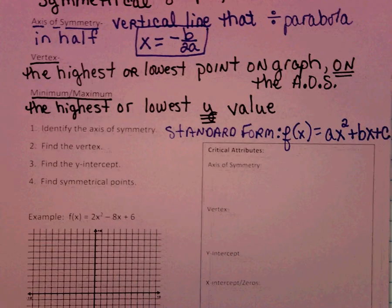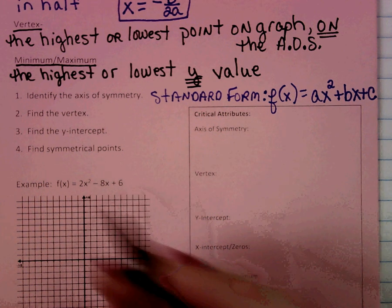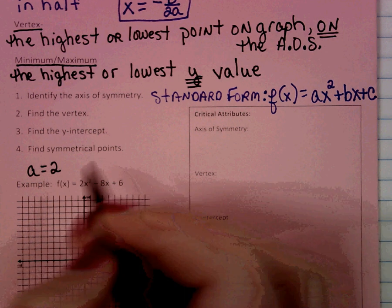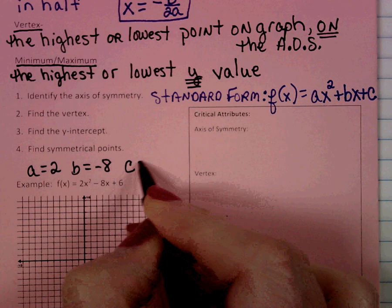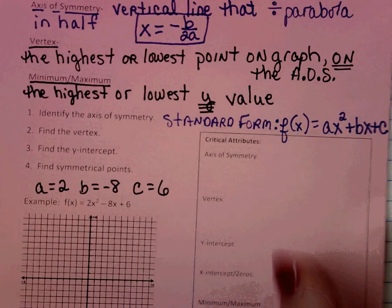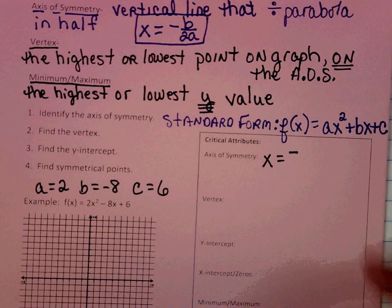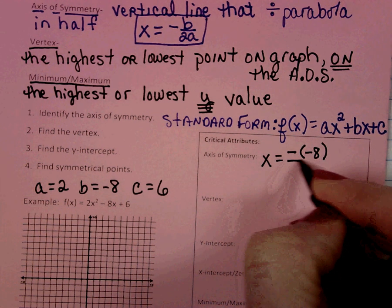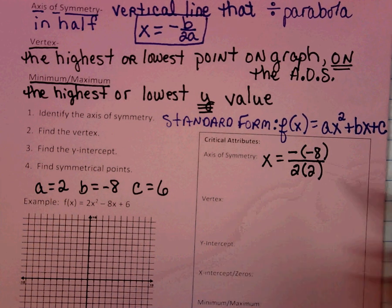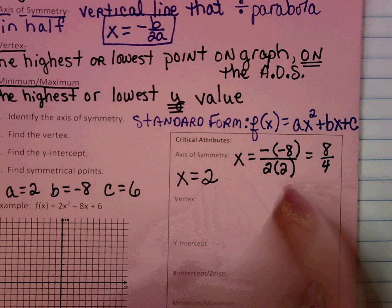When graphing a quadratic function, the first thing we need to do is identify the axis of symmetry. It's useful to identify our a, b, and c values first. Looking at our example, the a value is 2, the b value is negative 8, and the c value is 6. Using the formula, x equals negative b over 2a, we get x equals negative negative 8 over 2 times 2, which is positive 8 over 4, which equals 2. So our axis of symmetry is x equals 2, a vertical line.